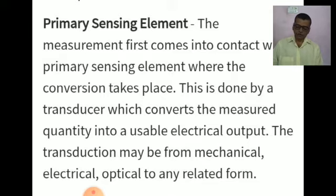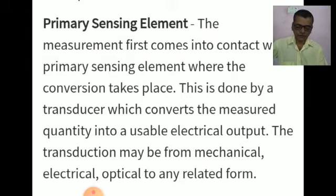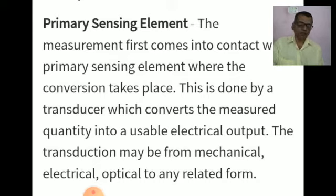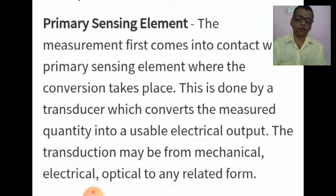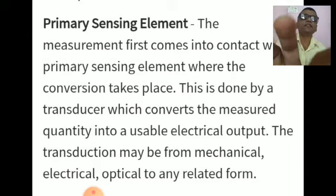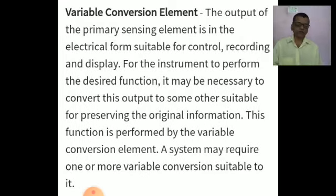In short, the primary sensing element is a detector transducer stage. The measurand is first detected by the primary sensor or transducer. After sensing and detecting the measurand, the transducer gives an output in electrical form — it may be voltage, frequency, or some other electrical form. This covers the first element, the primary sensing element.